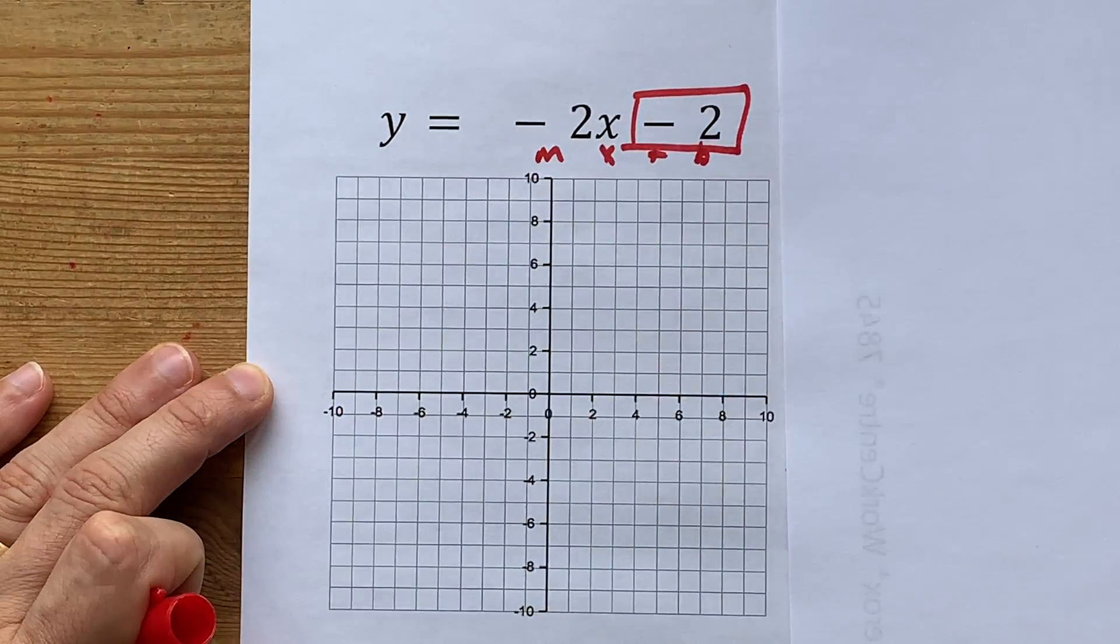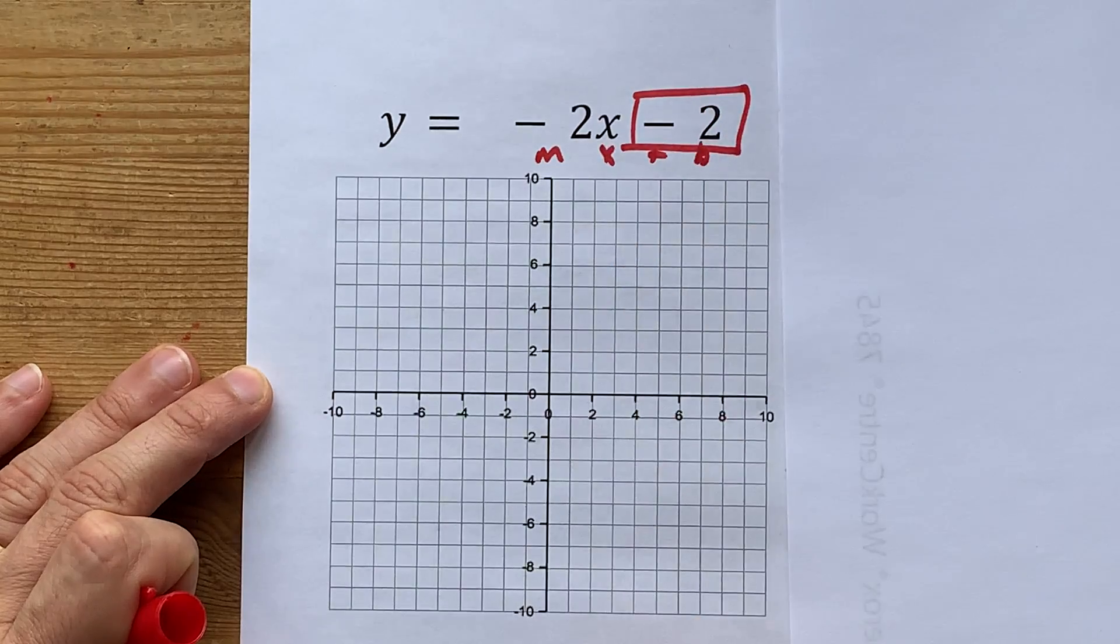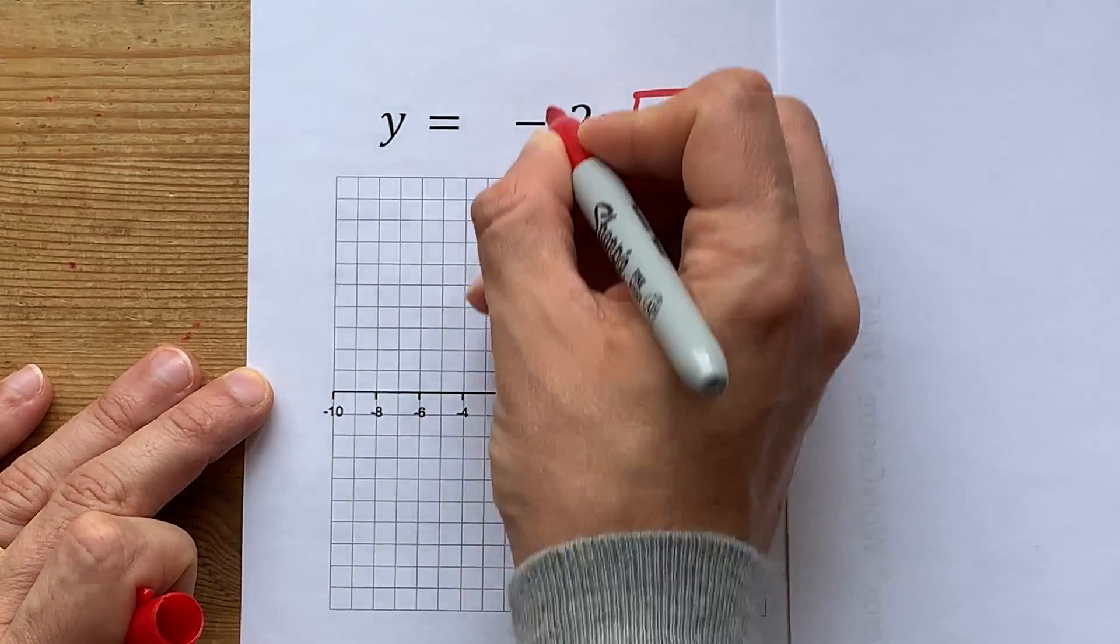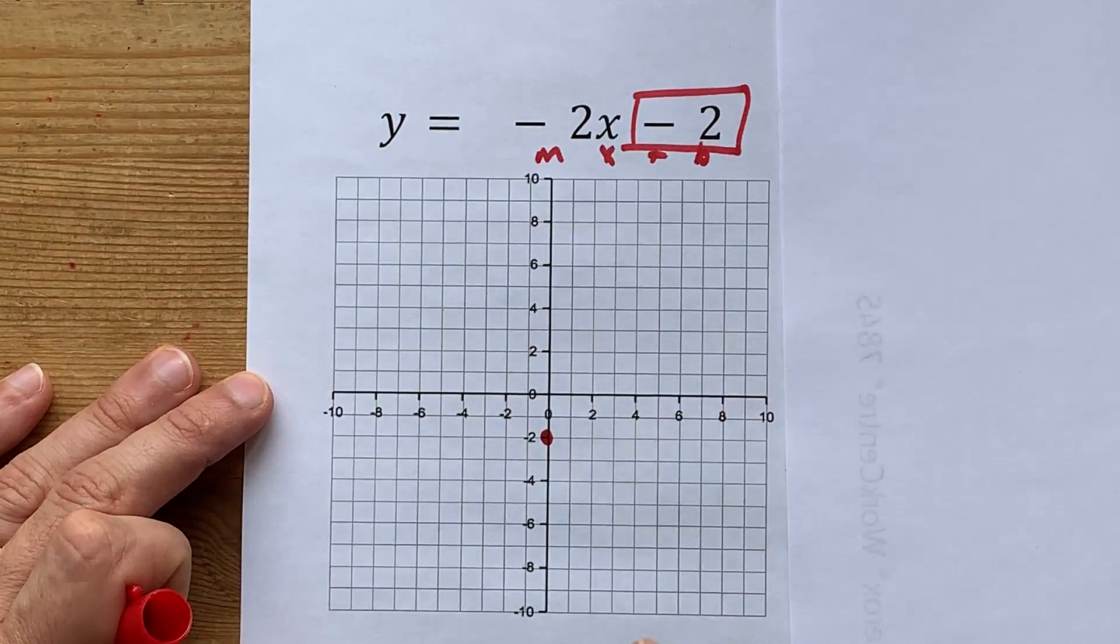that's not attached to the x, is the y-intercept. For that reason, I want you to put a dot here on the y-axis, the up-down axis, at negative 2. Great.